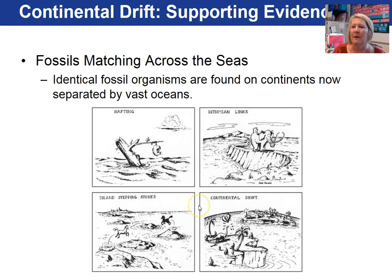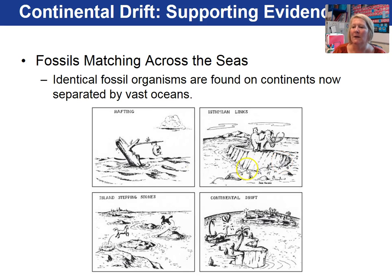This image shows some ideas of how the remains of organisms could end up on other continents. Some suggested maybe they just rode across on a piece of wood, or maybe there was a narrow piece of land connecting the continents, or island stepping stones that they jumped across a large ocean to reach another continent — or continental drift.